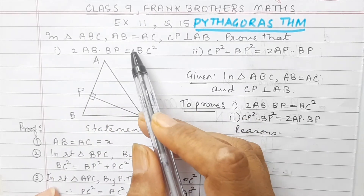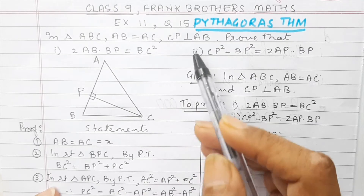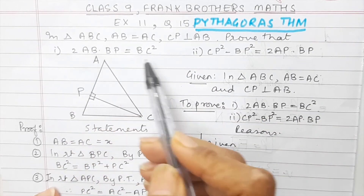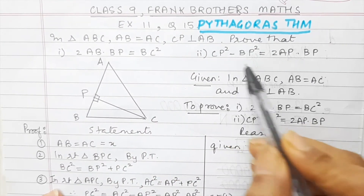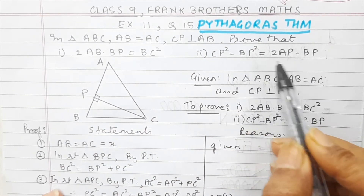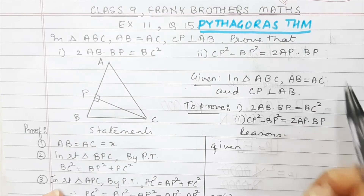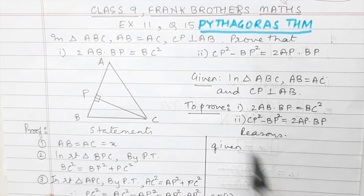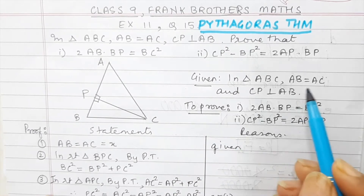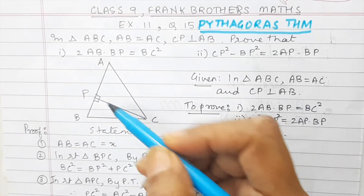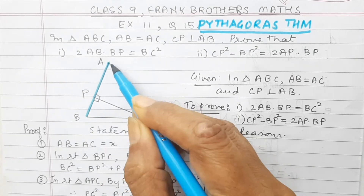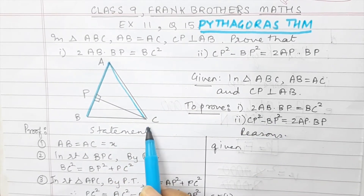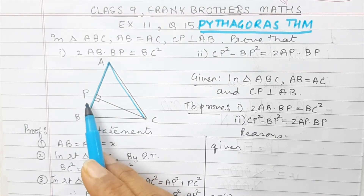In a triangle ABC, AB is equal to AC, and CP is perpendicular to AB. Prove that: number one, 2 AB into BP is equal to BC square, and number two, CP square minus BP square is equal to 2 AP into BP. So whenever we have a question like this, the first thing we have to do is draw the diagram. In the diagram, AB is equal to AC, and CP is perpendicular to AB.